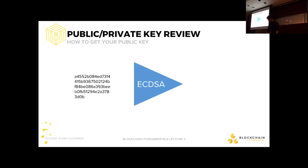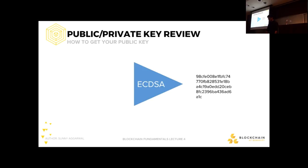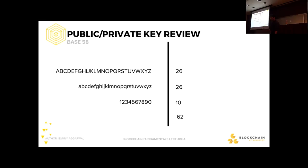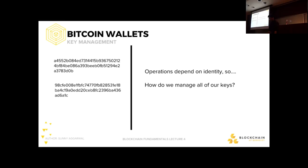Before we get into wallet types, it's important to reaffirm our understanding of identity in Bitcoin. Everyone in Bitcoin is uniquely identified by their private key — a huge random number. You pass it through ECDSA, the elliptic curve digital signature algorithm, to get your public key, and you hash your public key to get your address. Addresses are still pretty big, so we employ a scheme called Base58 to get rid of the ambiguity that arises between characters that look the same.